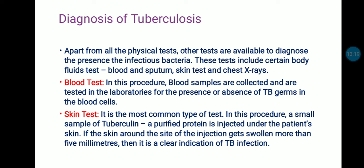Diagnosis of tuberculosis: apart from physical tests, other tests are available to diagnose the infectious bacteria. These include body fluid tests, blood and sputum tests, skin tests, and chest X-rays. In a blood test, blood samples are collected and tested in laboratories for the presence or absence of TB germs in blood cells. In a skin test — the most common type — a small sample of tuberculin, which is a purified protein, is injected under the patient's skin. If the skin around the injection site gets swollen more than 5 mm, it is a clear indication of TB infection.